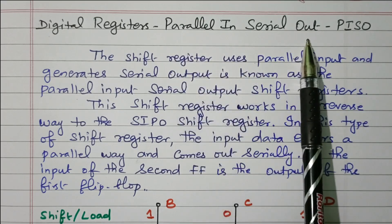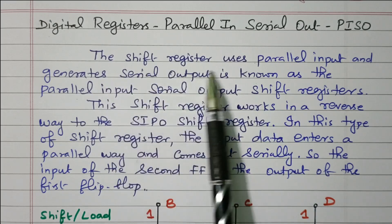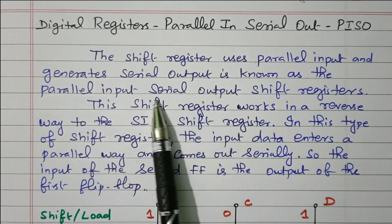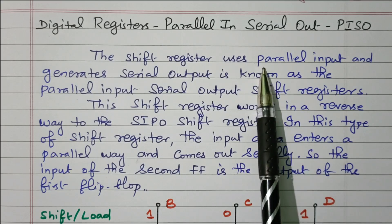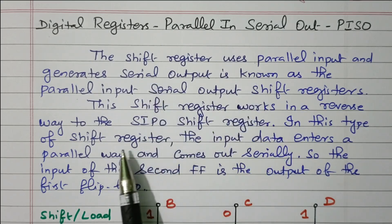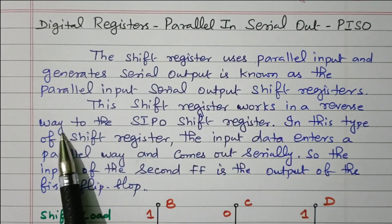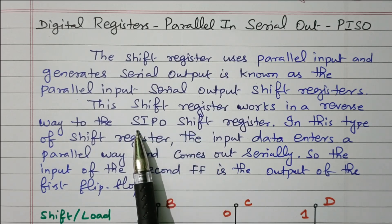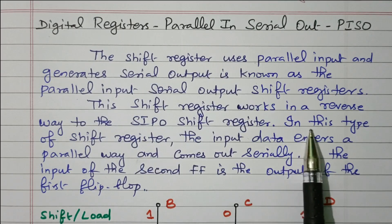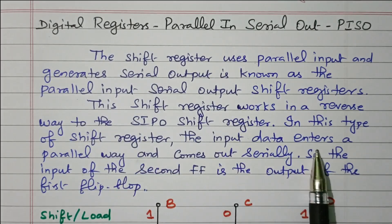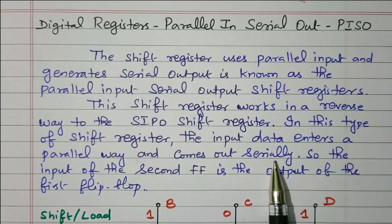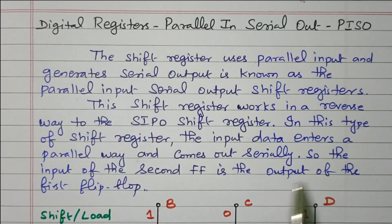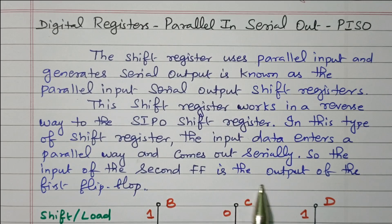The Parallel In Serial Out digital register: the shift register that uses parallel input and generates serial output is known as a Parallel Input Serial Output shift register. The data is given in parallel and the output is taken serially. This shift register works in the reverse way of SIPO (Serial Input Parallel Output). Here we have parallel input and serial output, so it is reversed. In this type of shift register, the input data enters in a parallel way and comes out serially.